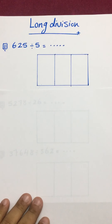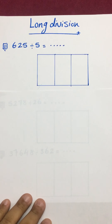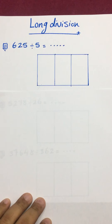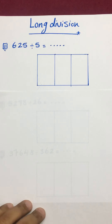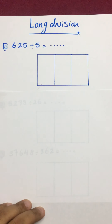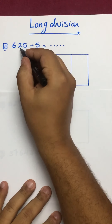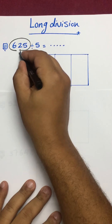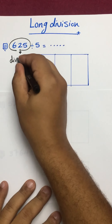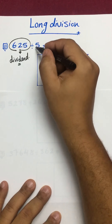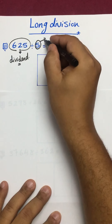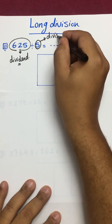The first example: number one is 625 divided by 5. We want to make a long division with 5 using the easy way — the box method. We have two numbers here. The first number, we call it the dividend. The second number, after the division sign, we call it the divisor.